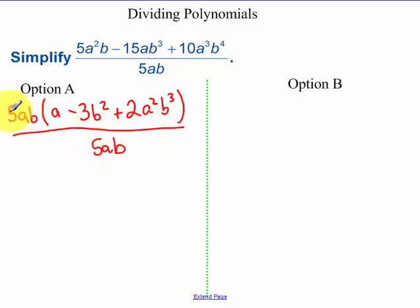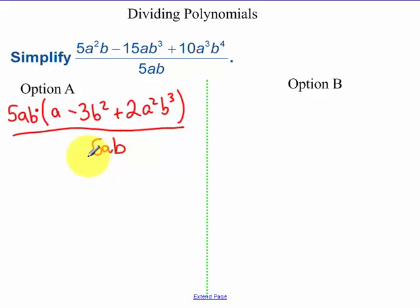Because I have 5 times a times b being multiplied to this trinomial, and the same thing in the denominator, we can just cancel that.